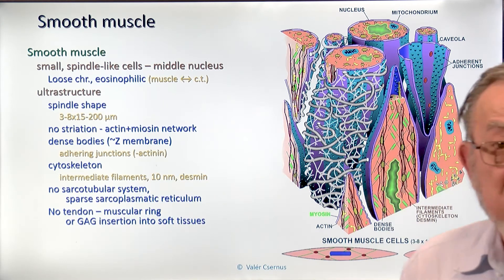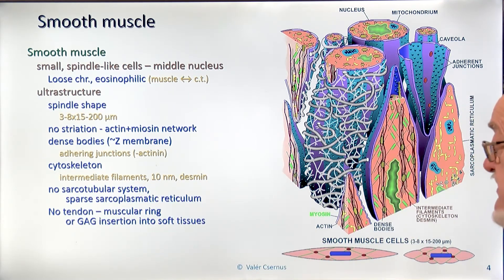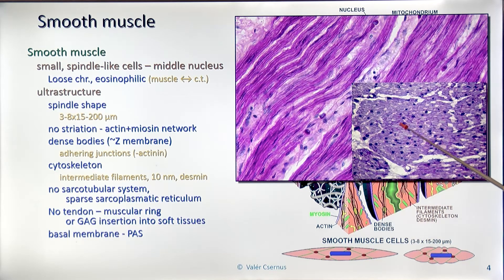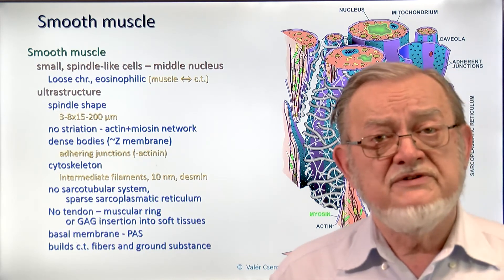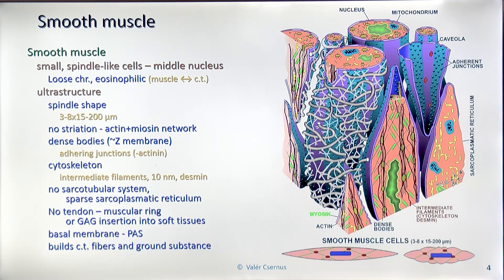The smooth muscle has no tendon — either the cells form rings catching their own tail, or they insert and are glued into soft tissues with glycosaminoglycans. Every single smooth muscle cell is surrounded by a basement membrane, visible in PAS-stained slides as PAS-positive rings in cross-section or longitudinal sections. Around smooth muscle cells we have rich collagen fibers, and neither the collagen fibers nor the proteoglycans are produced by fibrocytes, but by the smooth muscle cells themselves.